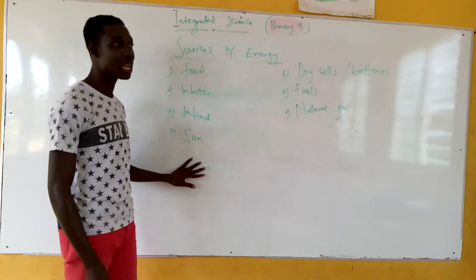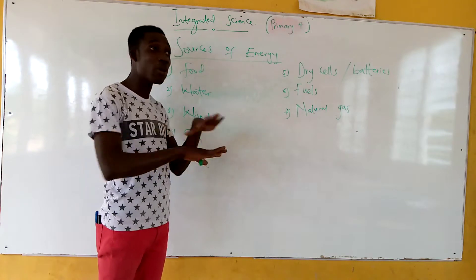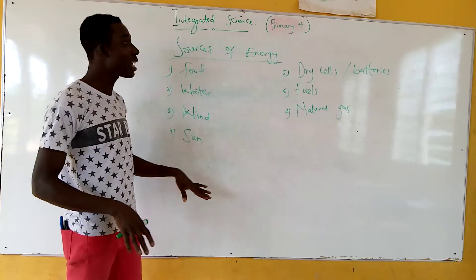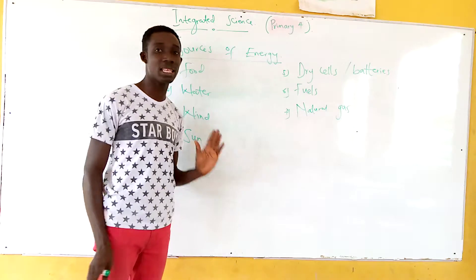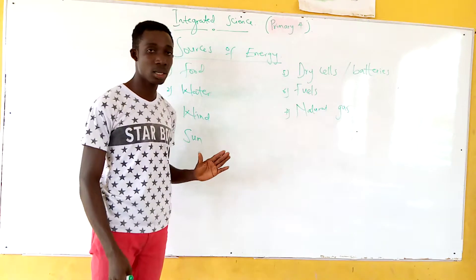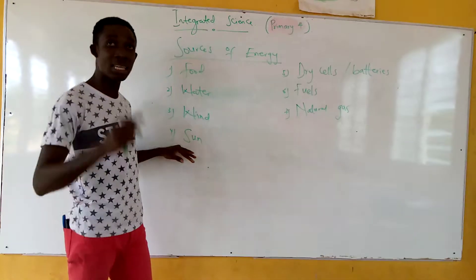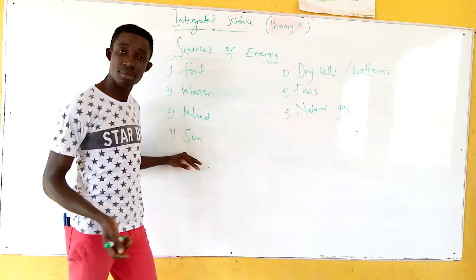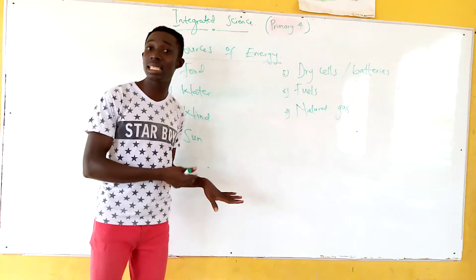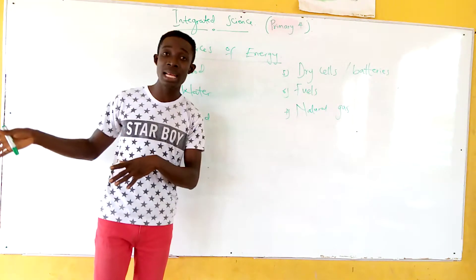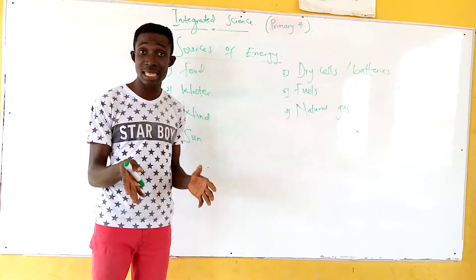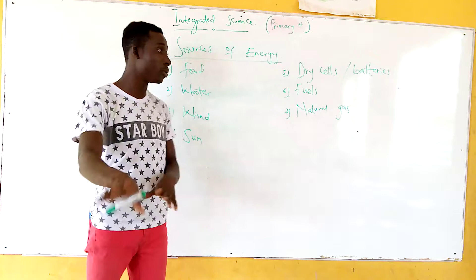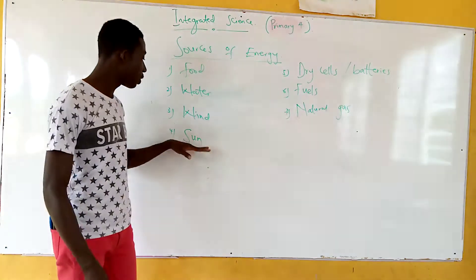The next one is the sun. The sun is our primary source of energy. Without the sun, we can't get any of these other sources of energy. The sun's energy is used by plants to manufacture food through photosynthesis — you know about that already.